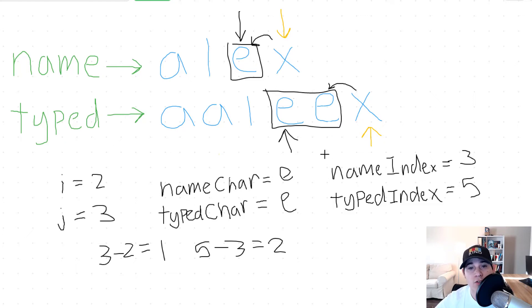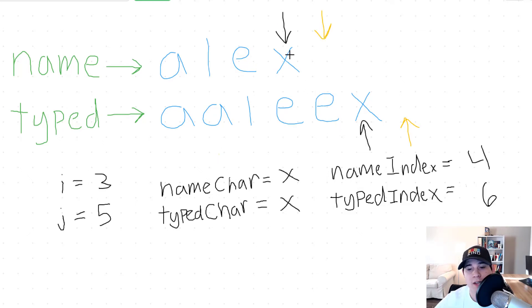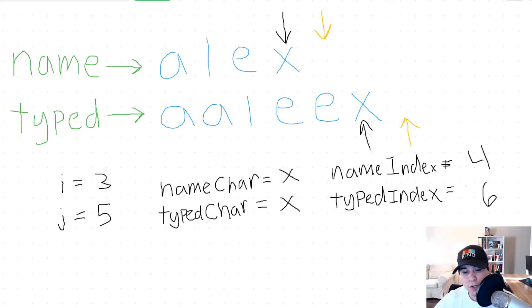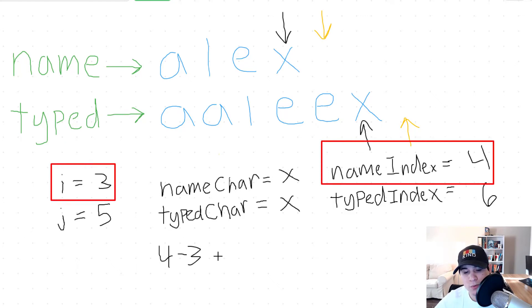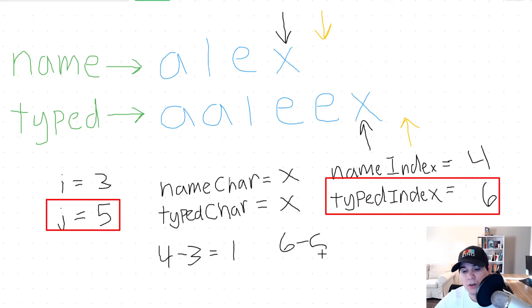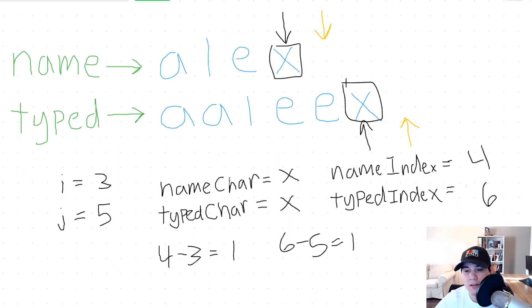We assign name index and typed index equal to I and J. Now we're looking at X and X, and our name and typed indices are outside of bounds, so we don't iterate further — we just compute the difference. Four minus three equals one, and six minus five also equals one. Both correspond to the single X in each string, confirming we have enough characters. We are finished iterating.